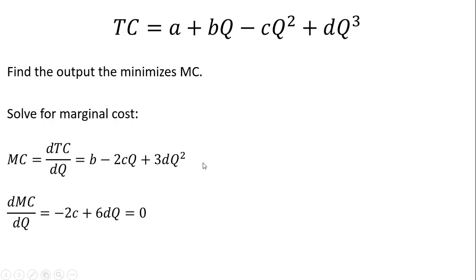We want to minimize marginal cost, so we take the derivative of it. The derivative of B is zero. The derivative of minus 2CQ is minus 2C. For the last term, bring the two down in front to get 2 times 3, which is 6, then subtract one from the exponent, leaving 6DQ. We set that result equal to zero.